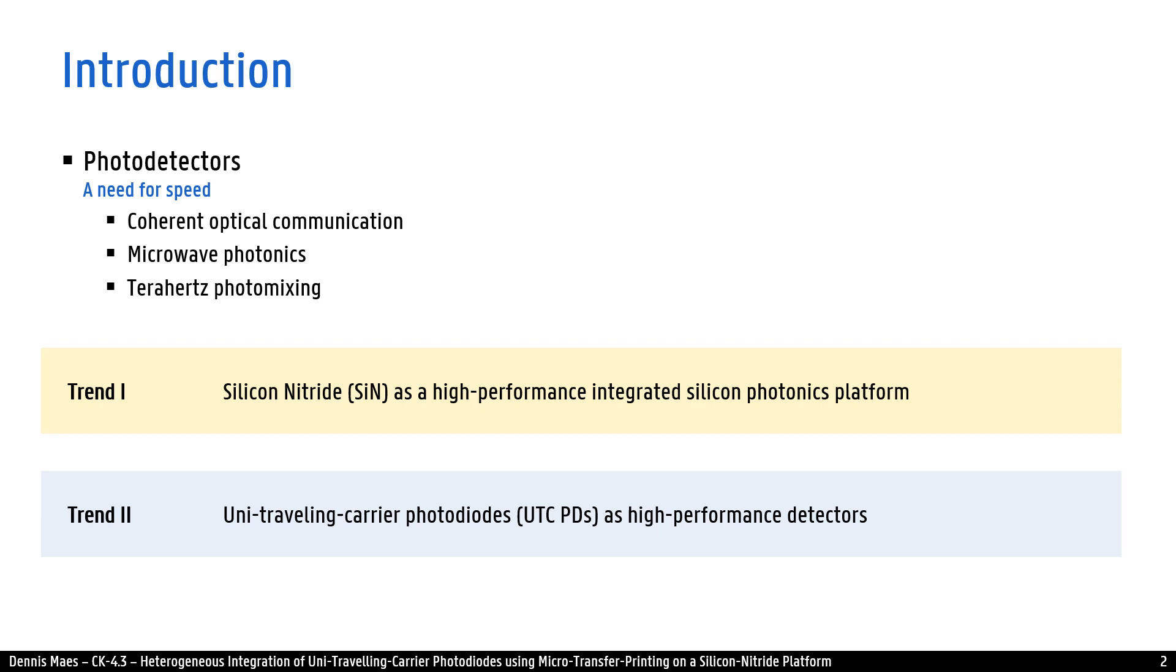The second trend is usage of advanced photodiodes like unitravelling carrier photodiodes as high-performance detectors. Compared to regular PIN photodiodes, its photoresponse is higher and it has a higher saturation power due to the reduced space charge screening effect.